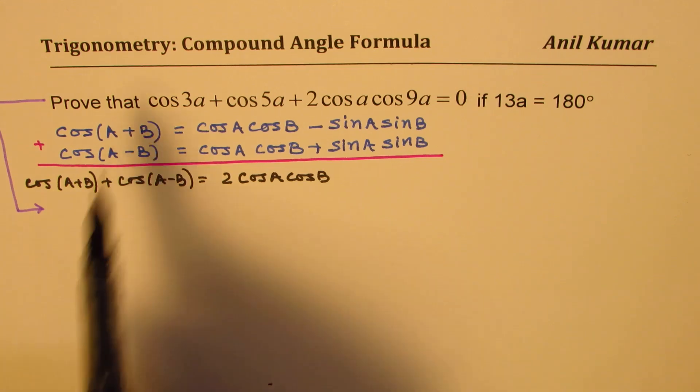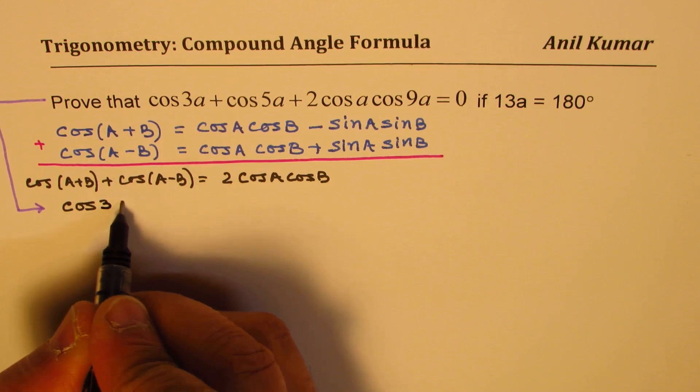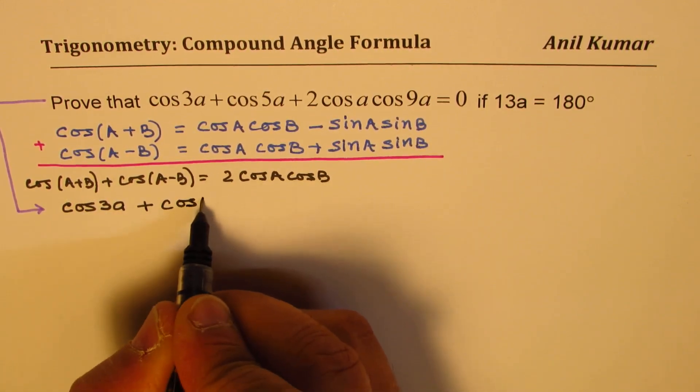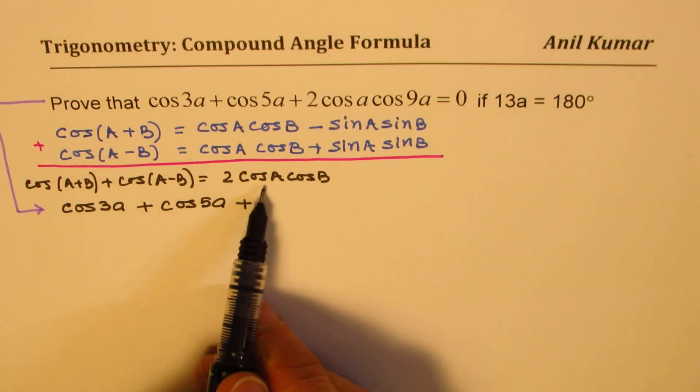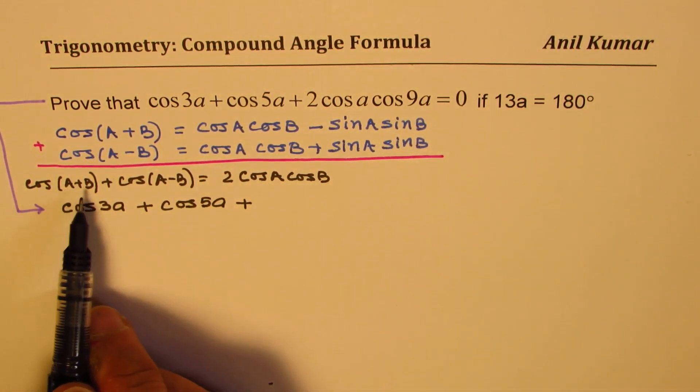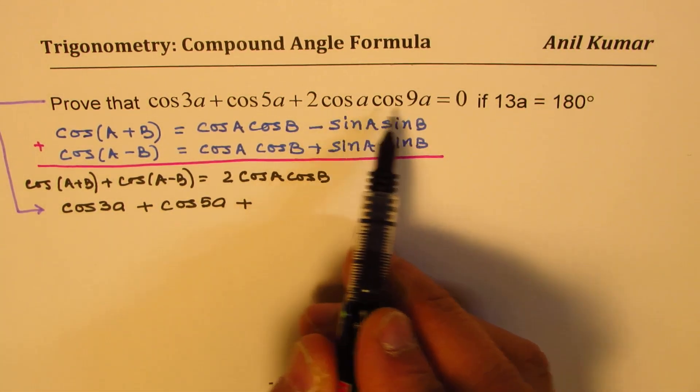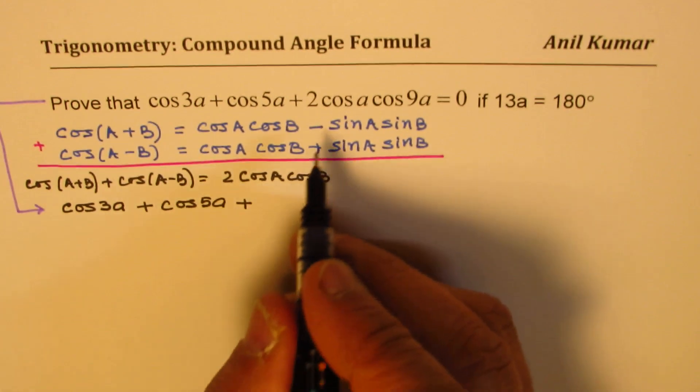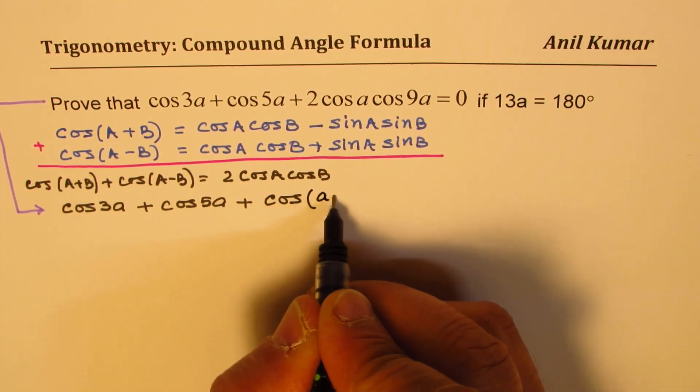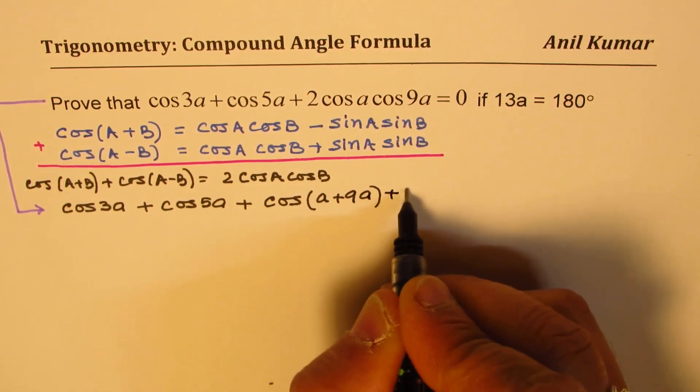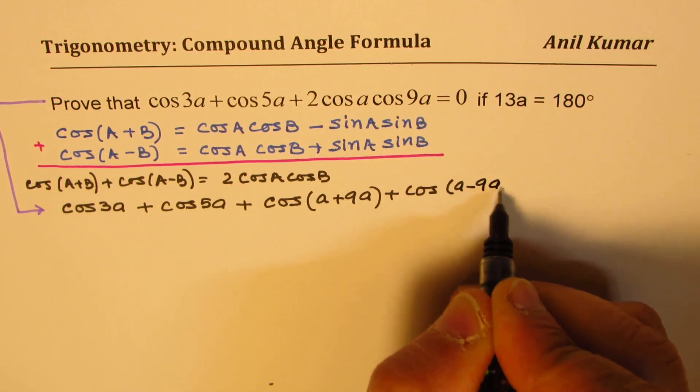So I will rewrite the equation as cos 3a plus cos 5a plus, and 2 times cos A cos B is cos A plus B plus cos A minus B. Now A and B here is lowercase a and 9a, so we could write this as cos of a plus 9a plus cos of a minus 9a.